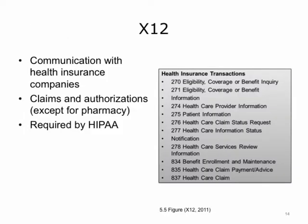Another information standard in healthcare is X12. X12 is important because it provides the standard messages for communication with health insurance companies. This is how it communicates claims and how it communicates authorizations, except for pharmacy. The 270 message is for eligibility coverage or benefit inquiry, and the 837 message is for healthcare claim. HIPAA requires that X12 be used when providers communicate with payers.